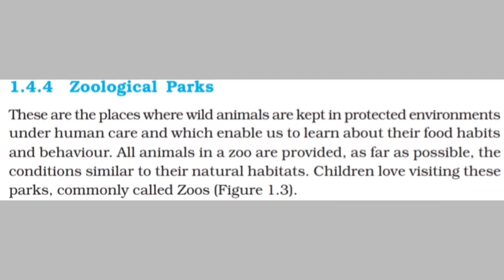The next taxonomical aid is zoological parks, most familiar to all of us. They are places where wild animals are kept in a protected environment under human care, enabling us to learn about their food habits and behavior. All animals in a zoo are provided, as far as possible, conditions similar to their natural habitat.